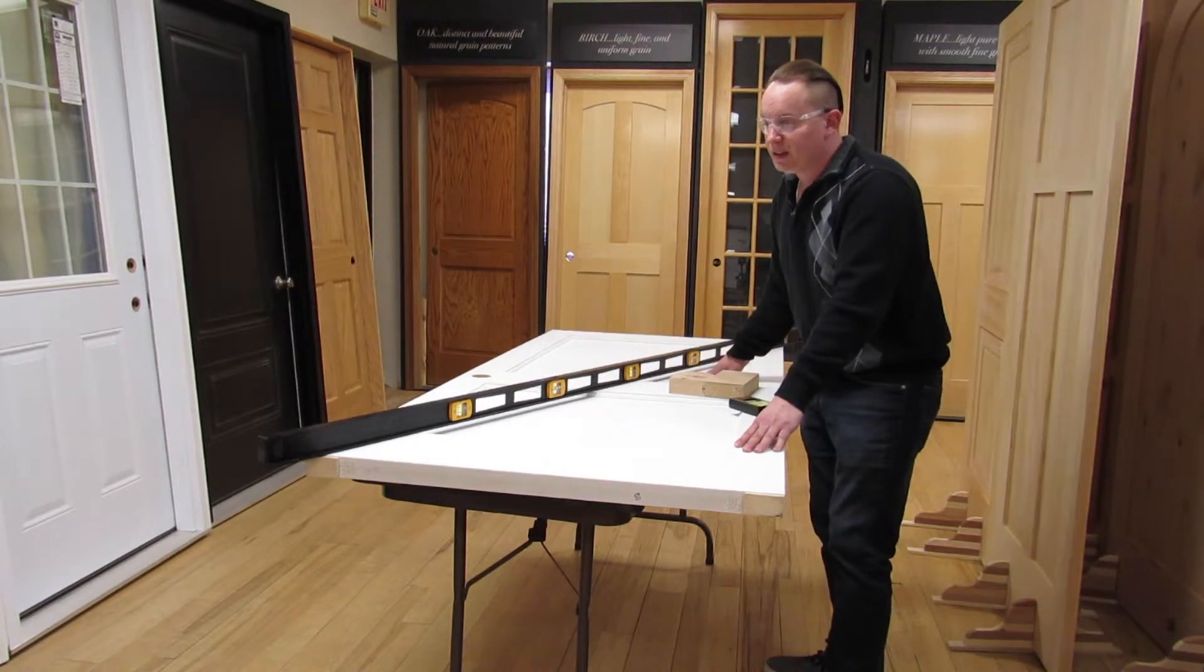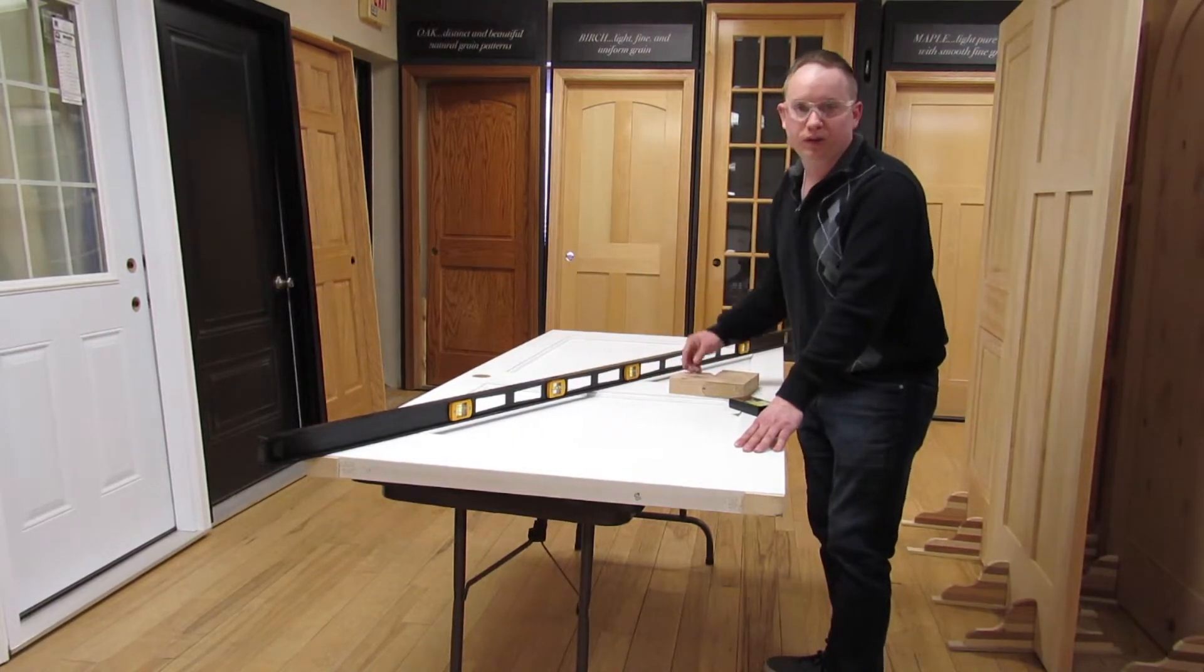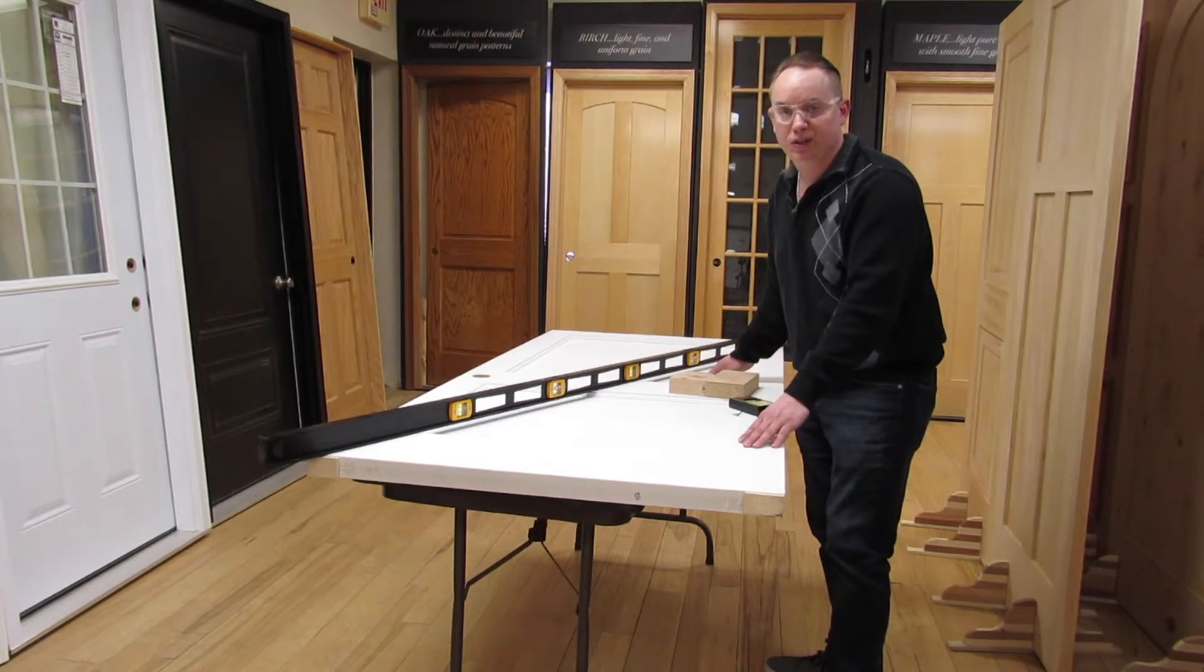The one thing that we can do to try to fix the warp is reintroduce this door into an environment like Woodport doors where we're constantly reintroducing more moisture.